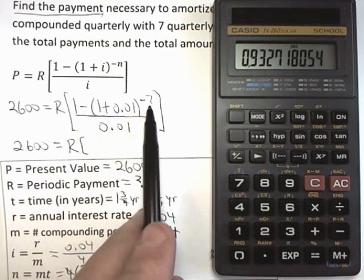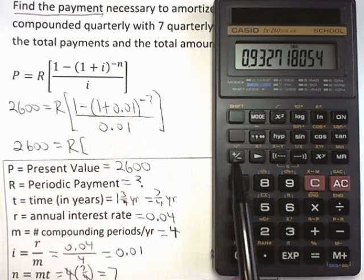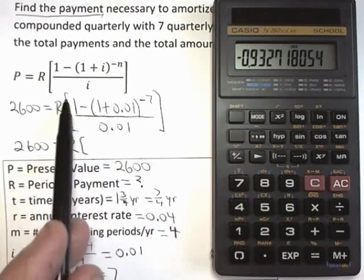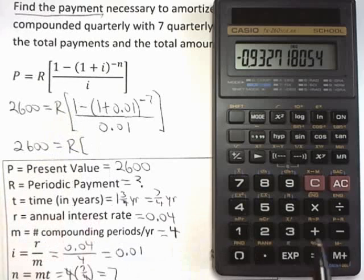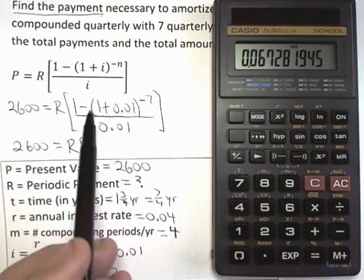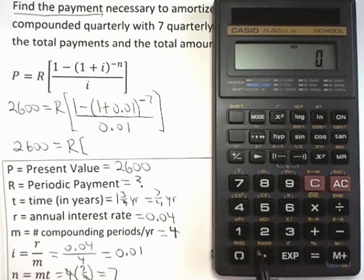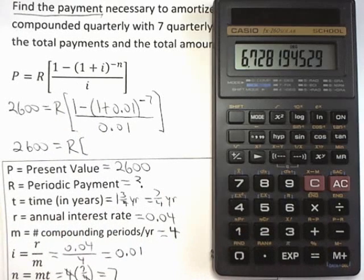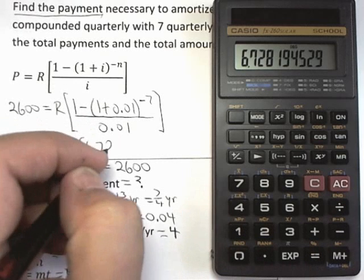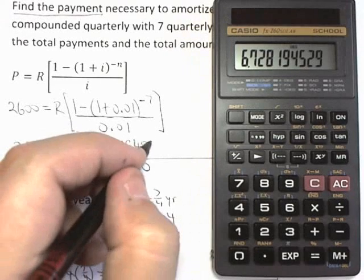Now you've got the negative in the exponent, so you're ready to hit equal. That quantity is the base raised to the power, but notice this quantity should be negative. So it's another perfect time to use the plus minus key. Notice that it becomes negative, and the only thing missing in the numerator is the plus 1. So you just add 1 and hit equal. That's the entire numerator. Now divide it by 0.01. Divide it by 0.01 equals. So that quantity is 6.728194529.